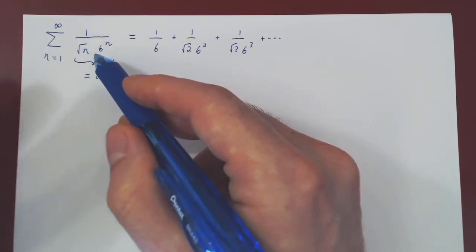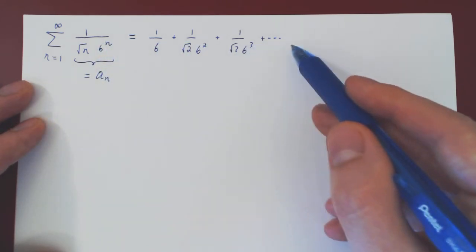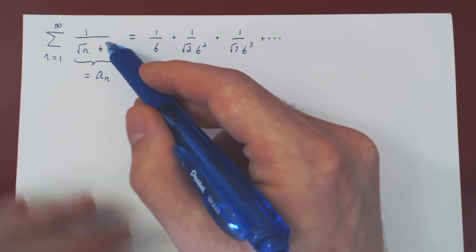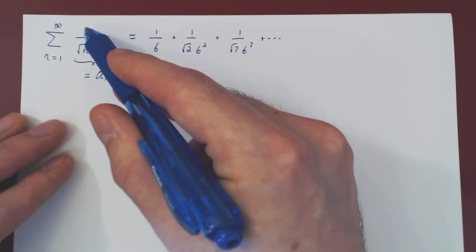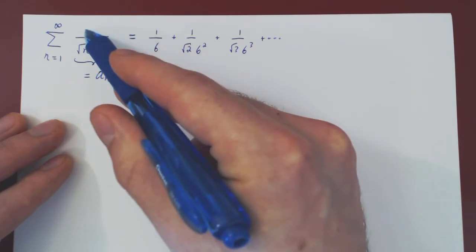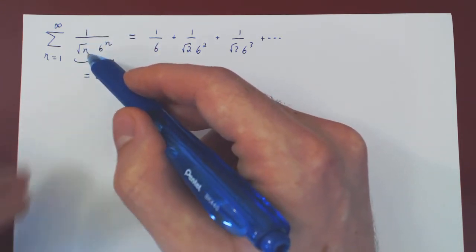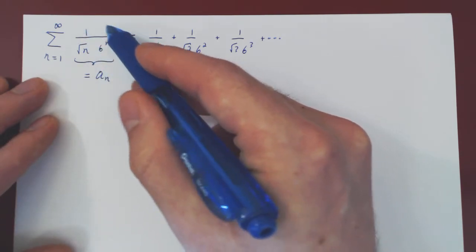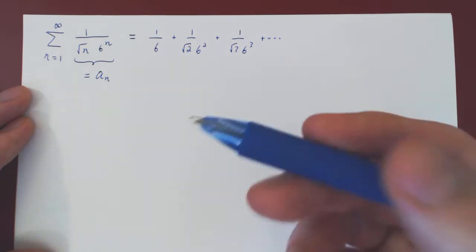And so, these terms that we're summing are getting smaller and smaller and smaller, and what makes them so small is the 6 to the n more than the root of n. So we'll try here and keep the 1 over 6 to the n, and drop the root of n. If we can accomplish this, then we'll be left with a geometric series, which we know how to handle.